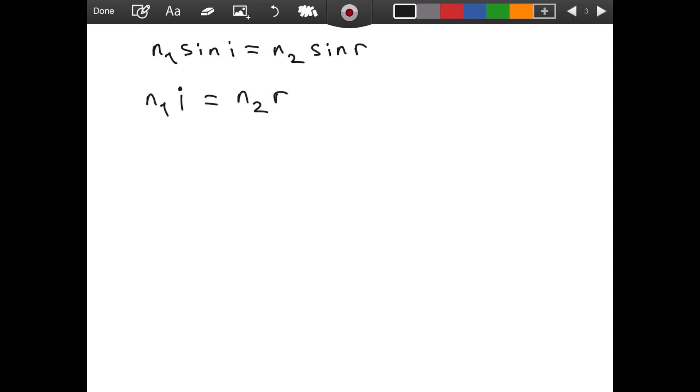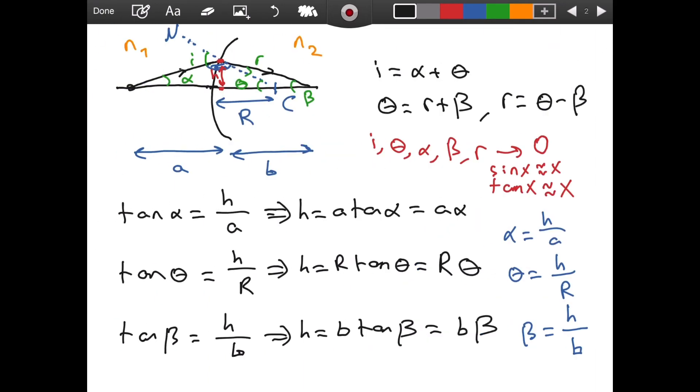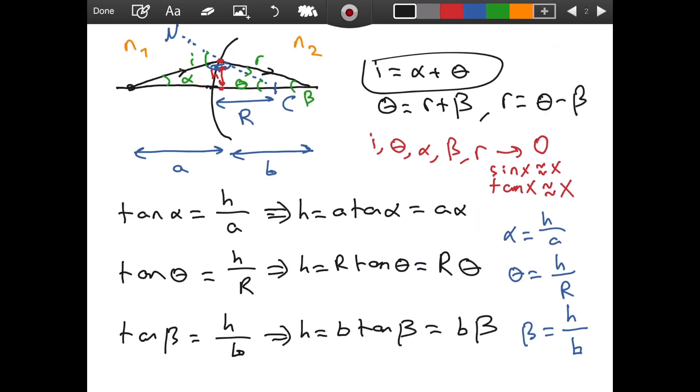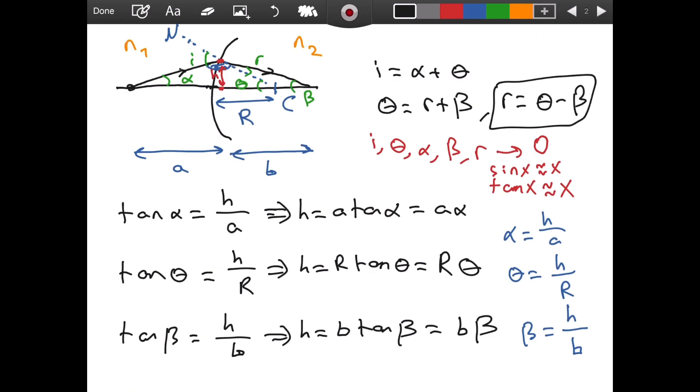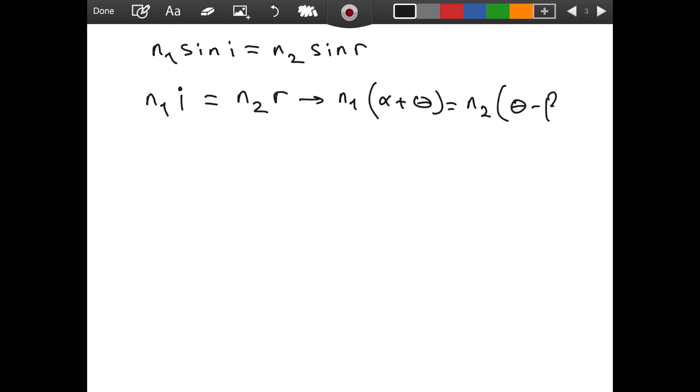Because we made a paraxial approximation, sine of x is approximately equal to x. I substituted that. This is equal to n2. And for sine of r, I similarly write r. Here, I can substitute for i and r as well. We will have n1. What is i? i is alpha plus theta. So we have alpha plus theta is equal to n2. What is r? It is going to be theta minus beta.